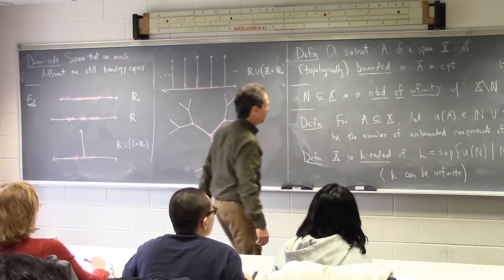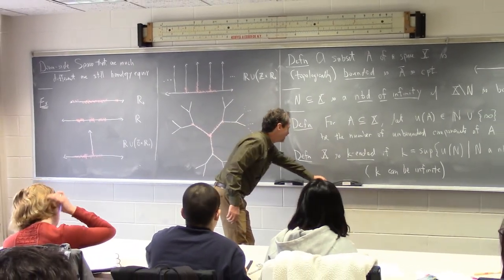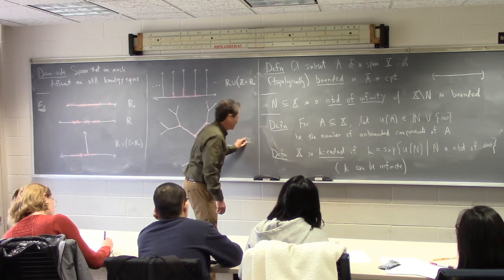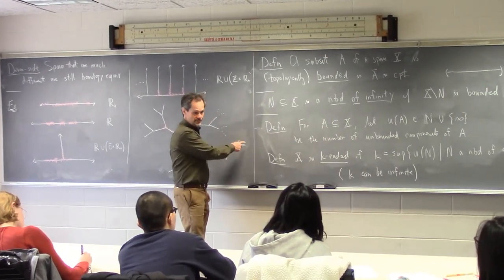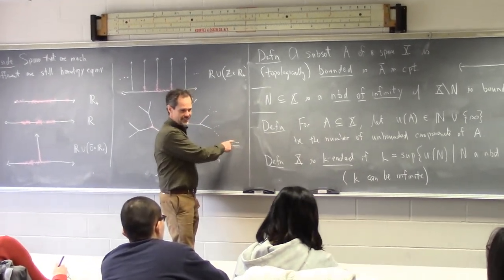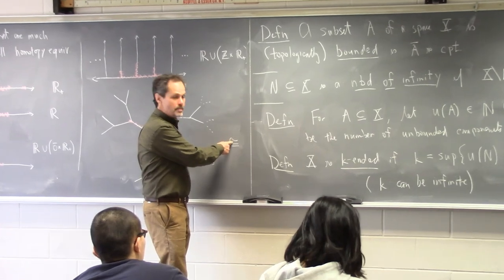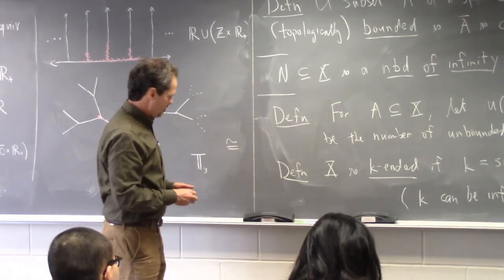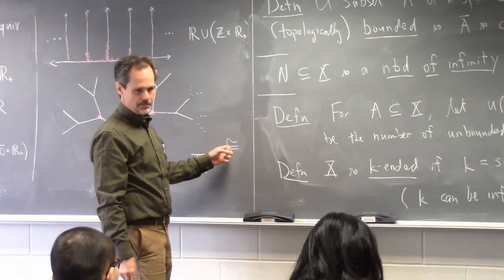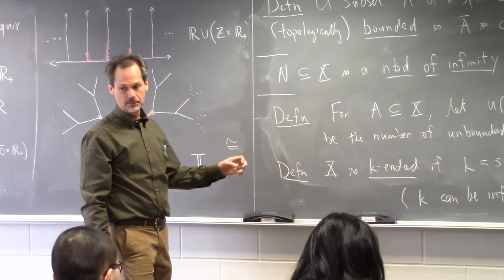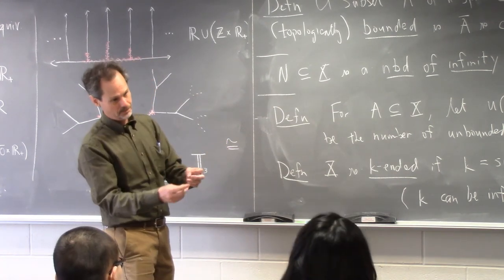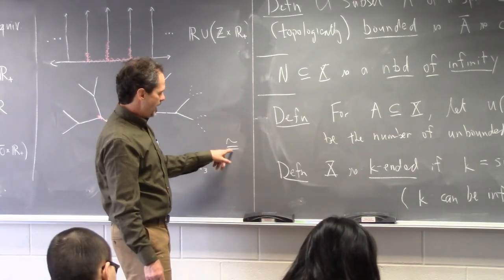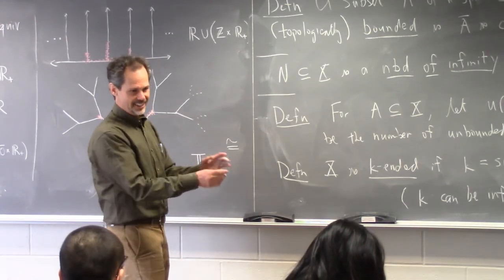One notation clarification: the tilde with two lines — ≅ — means isomorphism of groups. Algebraists have their act together and always use that symbol for isomorphism, whether group, ring, or otherwise.